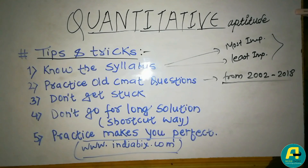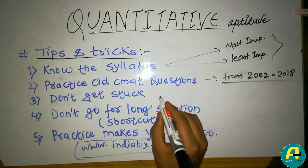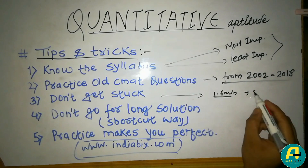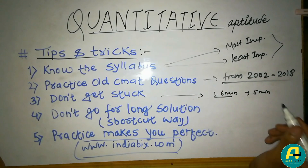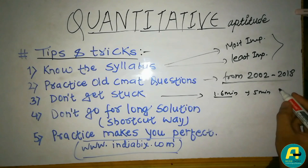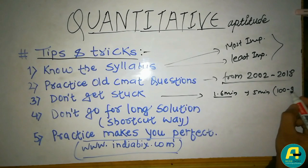When you get a hard question, move on. Go to the easy questions first. There are so many hard questions — skip them. Each question should take about 1.6 minutes. You are supposed to be able to do a question in about 5 minutes. You can do the same questions.